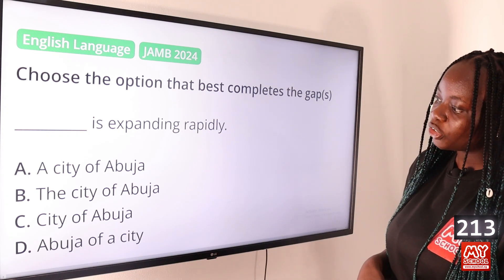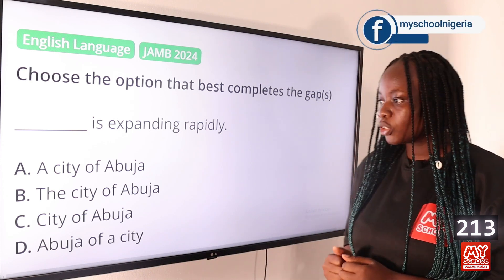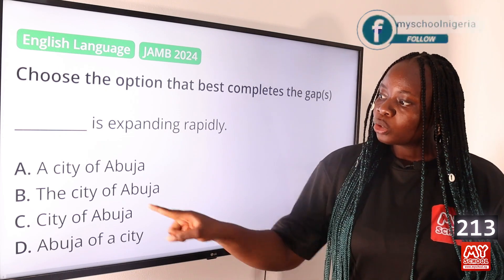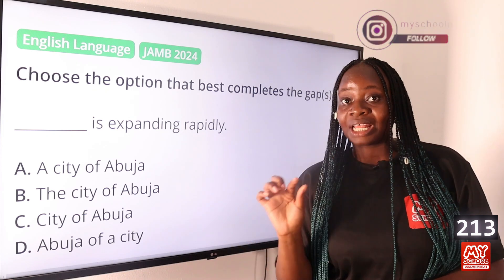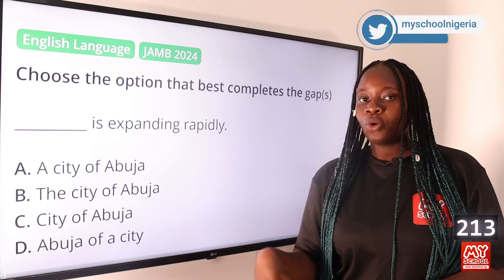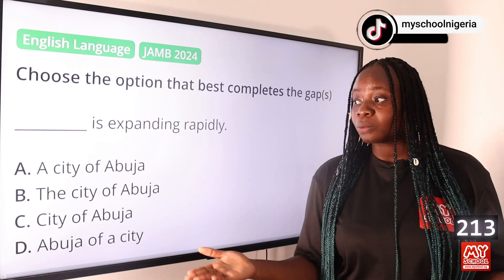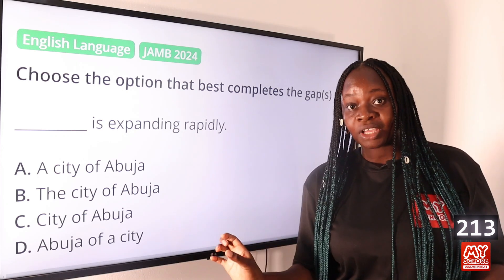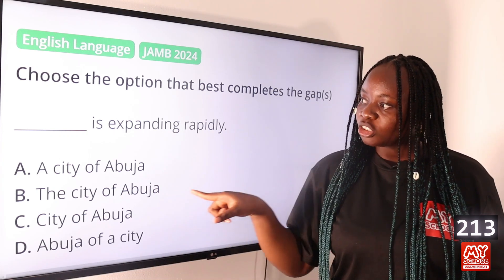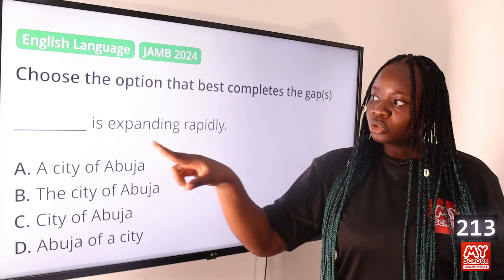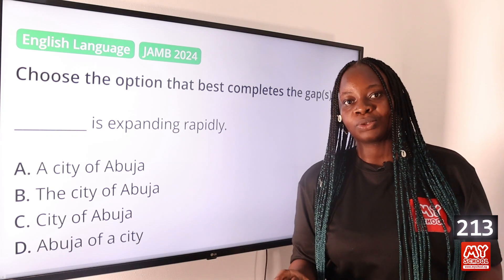Question 213: 'Dash is expanding rapidly.' Option A: a city of Abuja, B: the city of Abuja, C: city of Abuja, D: Abuja of a city. The answer is option B, the city of Abuja. The definite article 'the' is used to specify a particular proper noun. When referring to a common noun you can use 'a,' but here you are being specific — 'The city of Abuja is expanding rapidly.'